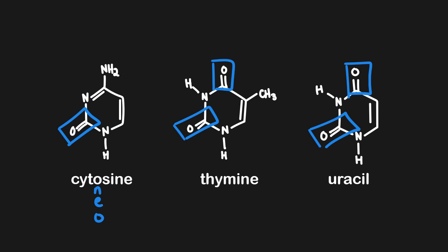What about the difference between thymine and uracil? Outside of the little methyl group hanging off the side of thymine, they are identical. We can remember that thymine refers to methyl in the name — if we think about how 'methyl' is spelled, it has 'thy' in it, and that's where the 'thy' prefix comes from, referring to the methyl group. For uracil, if we draw a shape between the oxygens, it's sort of U-shaped, which helps us remember that it must be uracil.